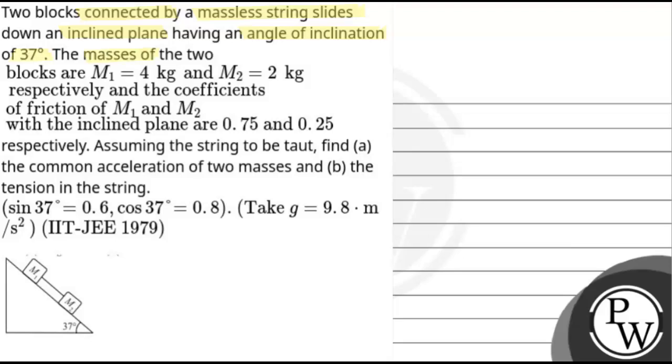The masses of the two blocks are m1 equals 4 kg and m2 equals 2 kg respectively, and the coefficients of friction of m1 and m2 with the inclined plane are 0.75 and 0.25 respectively. Assuming the string to be taut, find a) the common acceleration of two masses and b) the tension in the string. sin 37° is 0.6, cos 37° is 0.8, take g equals 9.8 meter per second square.